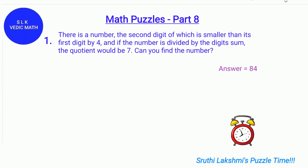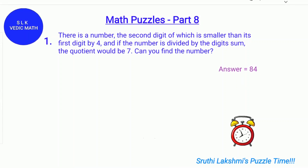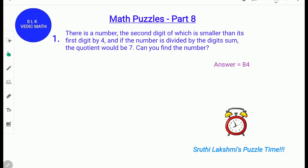The answer is 84. Let's see the question again. There is a number the second digit of which is smaller than its first digit by 4.